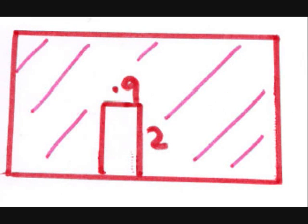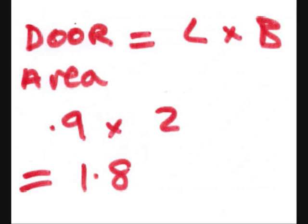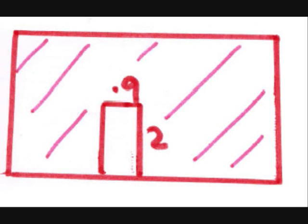Then what we do, we actually draw in the door. As you can see, I've put the door in with the measurements. And again, the area of the rectangle, length times the breadth, so 0.9 times 2 metres equals 1.8 metres squared.